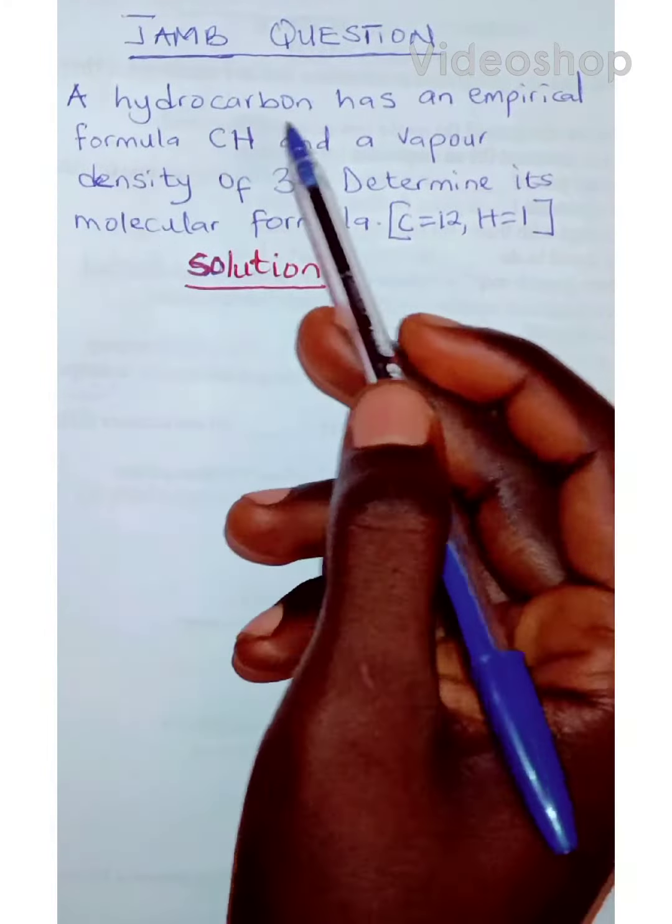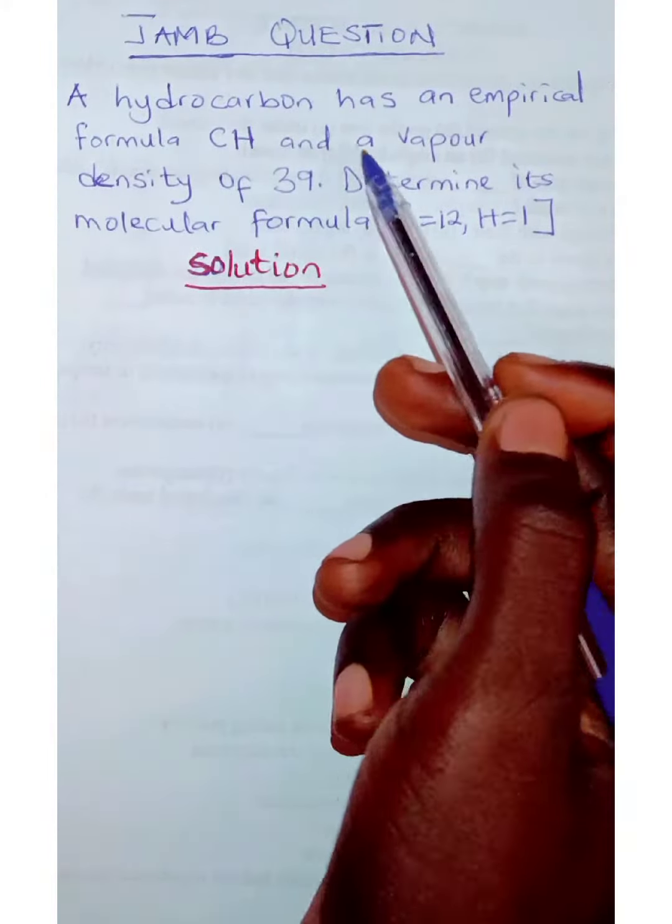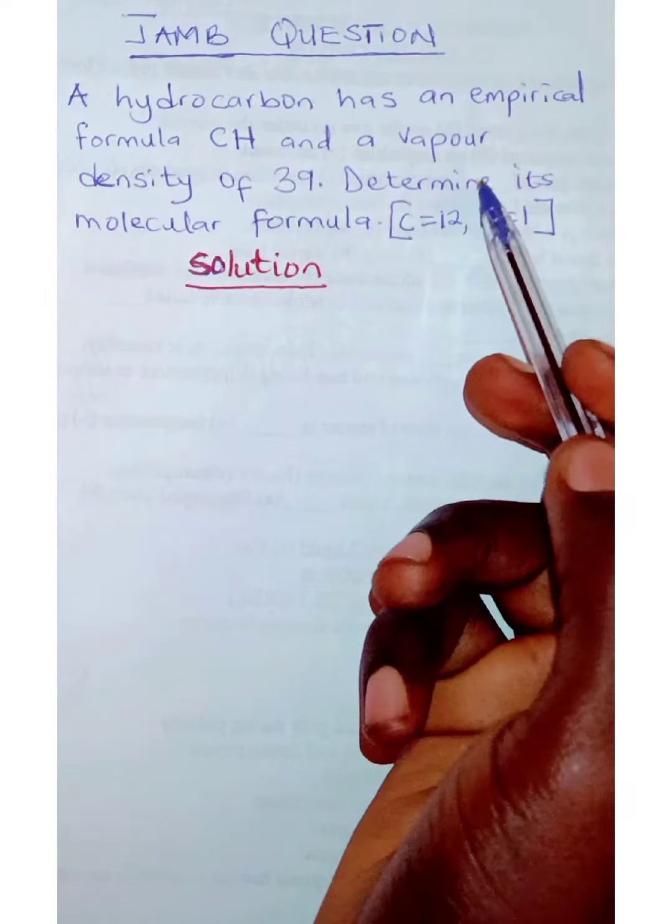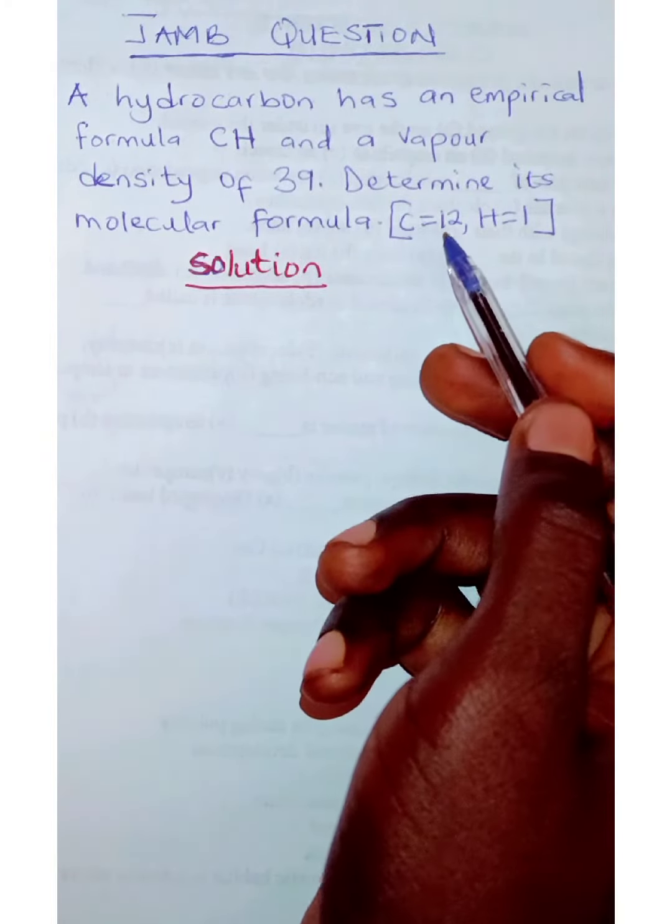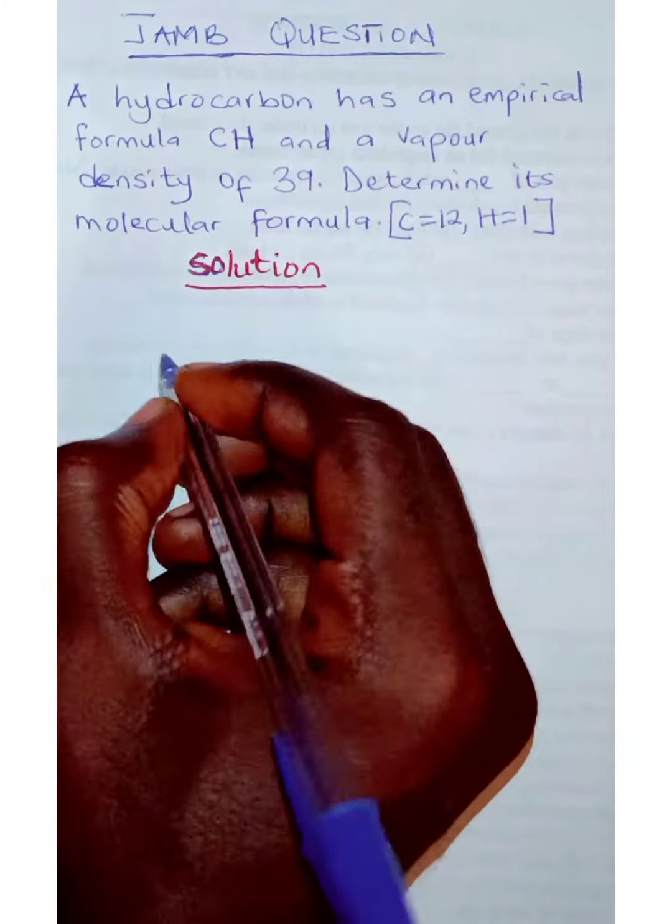We have a problem to solve. It says a hydrocarbon has an empirical formula CH and a vapor density of 39. Determine its molecular formula. We have the atomic mass of carbon and hydrogen.